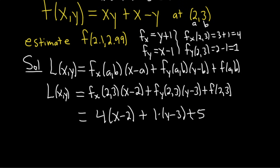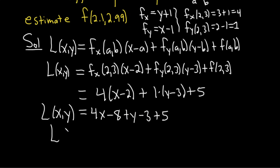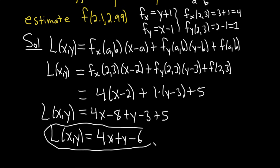Let's clean it up. L(x,y) equals 4 times x which is 4x, then 4 times negative 2 is negative 8, plus y, plus 1 times negative 3 is negative 3, plus 5. So L(x,y) equals 4x plus y, minus 8 minus 3 plus 5, which is minus 6. That should be the linear approximation.